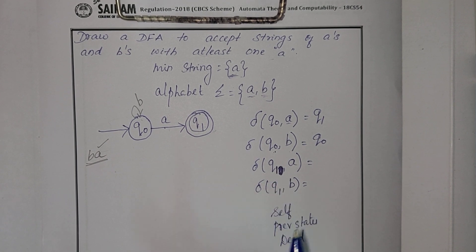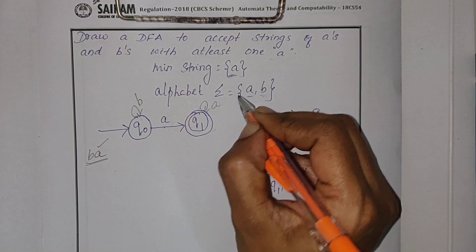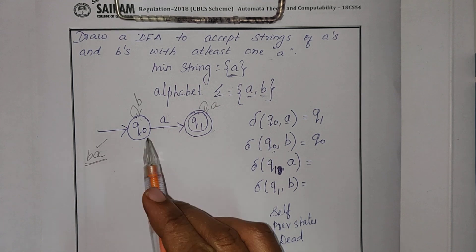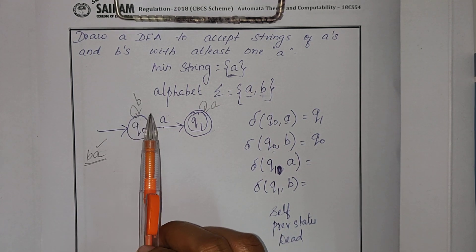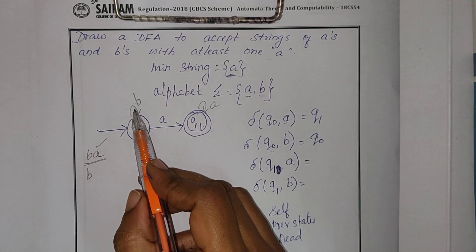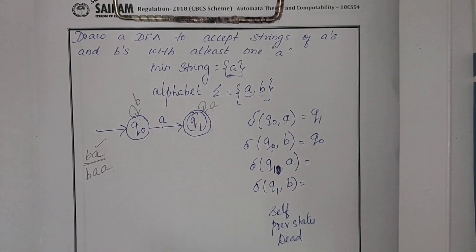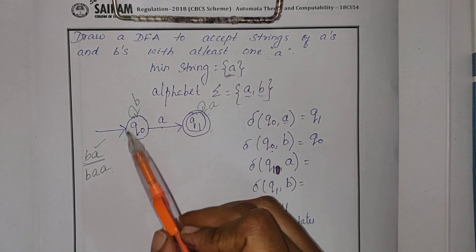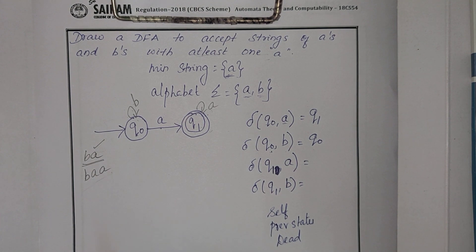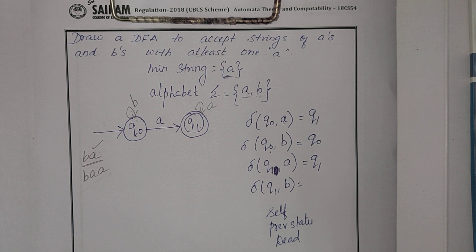Next I find Q1 comma A. I try with self. I write strings from start state to final state: B, A, A and A, A. The condition is at least one A — I have at least one A, meaning one or more A. So this marking is correct.